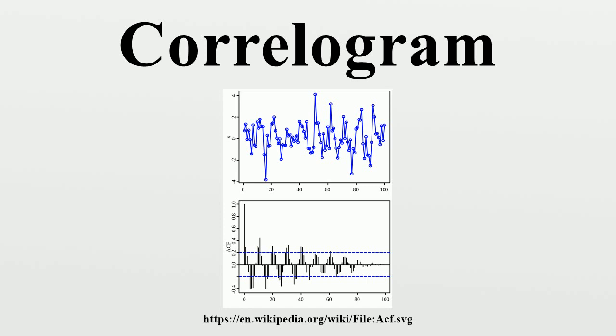Correlograms are also used in the model identification stage for fitting ARIMA models. In this case, a moving average model is assumed for the data and the following confidence bands should be generated, where K is the lag. In this case, the confidence bands increase as the lag increases.